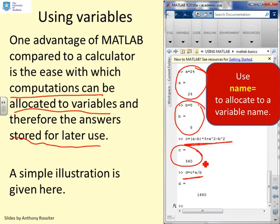The way you do this is you use this notation: name equals. You'll notice here I said A equals 24, B equals 8. You cannot write 8 equals A. If you do that you will get an error message. You have to put the variable name on the left hand side. That's the MATLAB syntax.